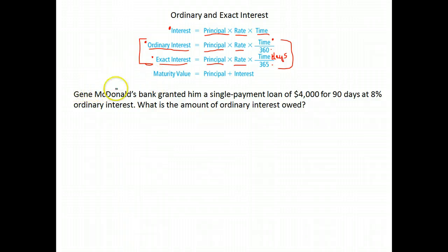Let's take a look at this example. Gene McDonald's bank granted him a single payment loan of $4,000 for 90 days at 8% ordinary interest. What's the amount of ordinary interest owed? So we want to find the amount of ordinary interest.